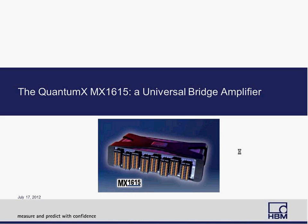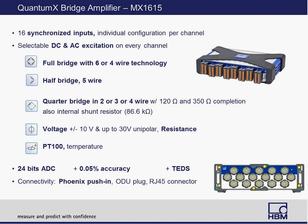The 1615 module is the bridge amplifier. It has 16 synchronized inputs, and each channel is individually configurable in terms of filter, bandwidth, and sample rate. This is the first module we have that offers both DC and AC excitation on every channel. So you can select DC excitation on one channel and AC excitation—more commonly known as carrier frequency excitation—on another. It supports full bridge with six or four wire technology, half bridge, as well as quarter bridge with two, three, or four wire technology, and 120 and 350 ohm completion resistors, as well as an internal shunt resistor of 86.6 kohm.